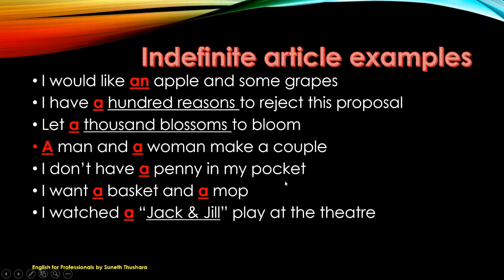Don't say 'I want a basket and mop' — that is incomplete. However, you can say 'I want a basket and the mop,' which means the mop is already there and you know it exists, but you don't know whether a basket is available. Then: 'I watched a Jack and Jill play at the theater.' Here 'Jack and Jill' is the name of the play, and it is one of many such plays — that is why you use 'a Jack and Jill.' Otherwise you could just say 'I watched Jack and Jill play at the theater.'